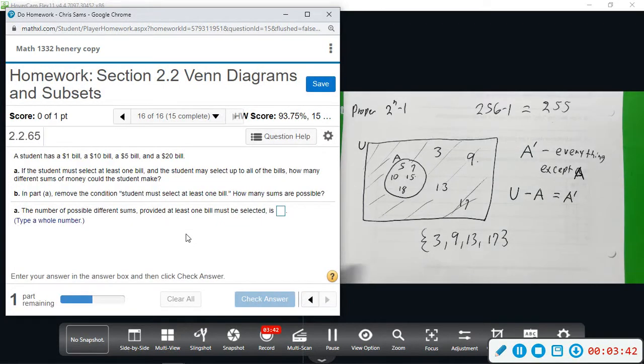Alright, and then number 16, this is the last one we'll see here. A student has $1 bill, $10 bill, $5 bill, and $20 bill. And then it says if the student must select at least one bill, and he may select up to all of the bills, how many different sums of money could he make?